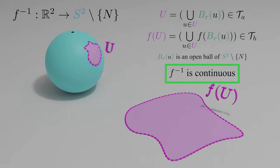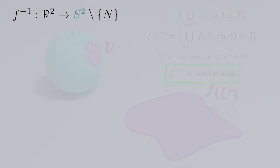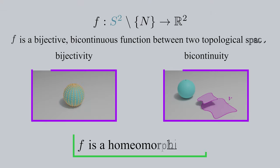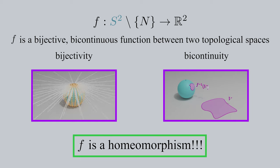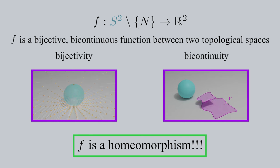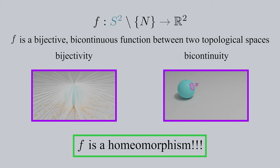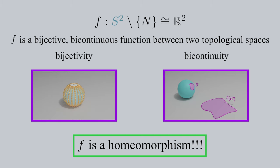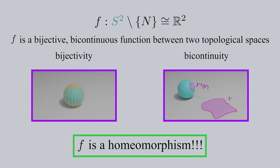I hope you have a deeper understanding of why f and f inverse are continuous. To sum things up, our stereographic projection function between the punctured sphere and R² is a bijective, bicontinuous function between two topological spaces. Therefore, our punctured sphere and plane are homeomorphic. Thanks for watching part two of this series.